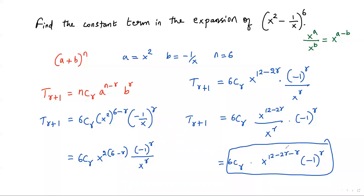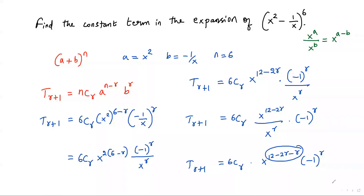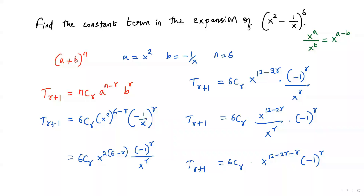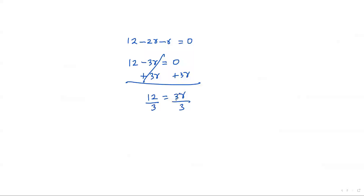If we want this term to be a constant term, the exponent of x must be 0. The exponent is 12 minus 2r minus r, so we set that equal to 0. Combining: 12 minus 3r equals 0. Adding 3r to both sides: 12 equals 3r. Dividing both sides by 3: r equals 4.